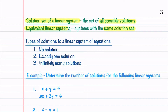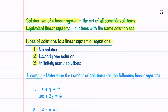A linear system of equations can have no solution, exactly one solution, or infinitely many solutions. There are no other possibilities.